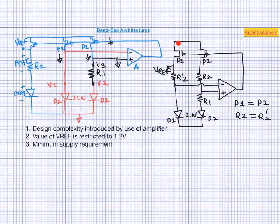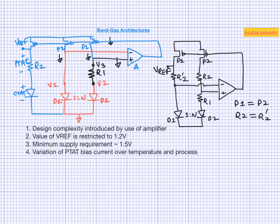A third limitation comes from the minimum supply requirement. These two pMOS transistors act as current sources and must operate in saturation. If Vref is 1.2 V and we allow around 200–300 mV across the Vds of these pMOS transistors, we need at least 1.4 to 1.5 volts of supply; adding cascode stages increases this even further. Another disadvantage is variation of the PTAT current over temperature and process corners: current increases by 70% from −40°C to 125°C.